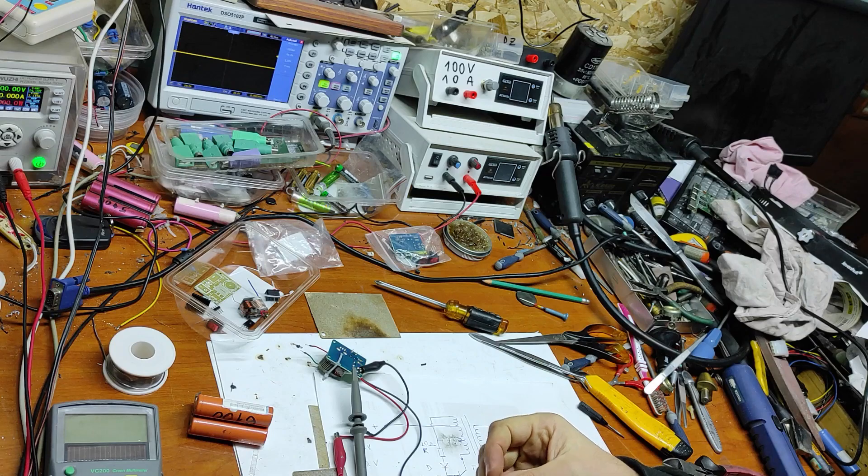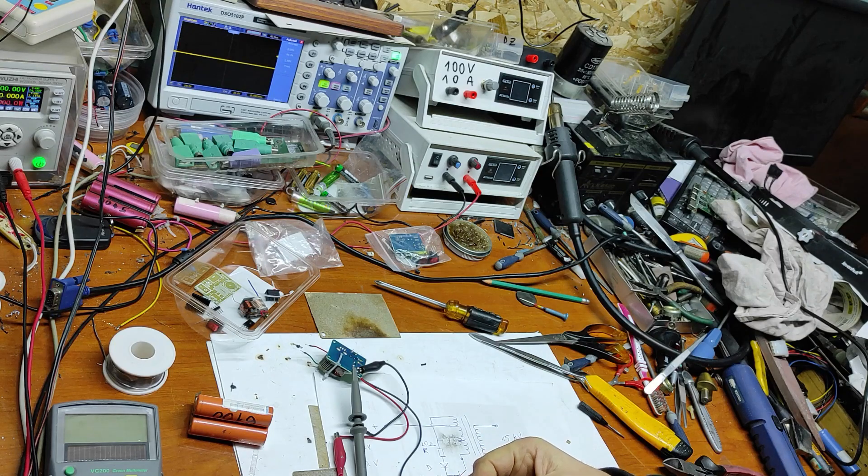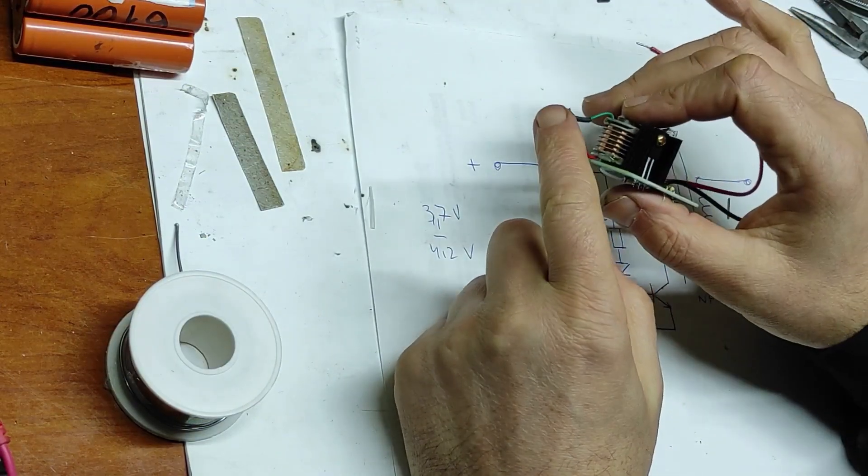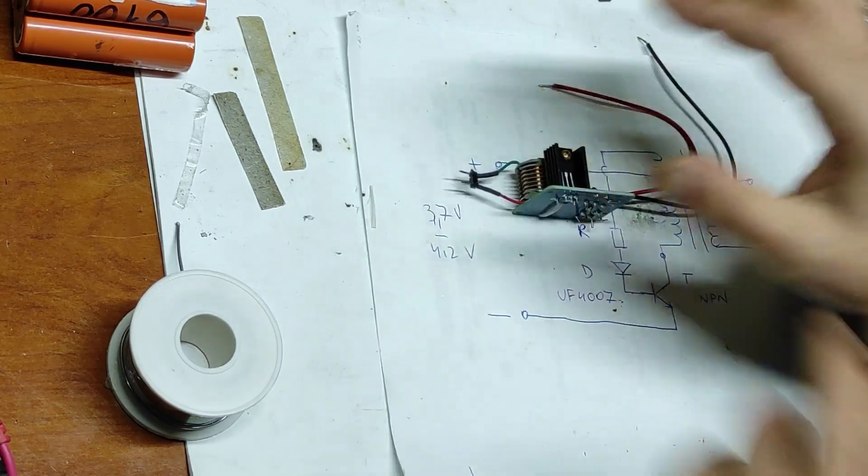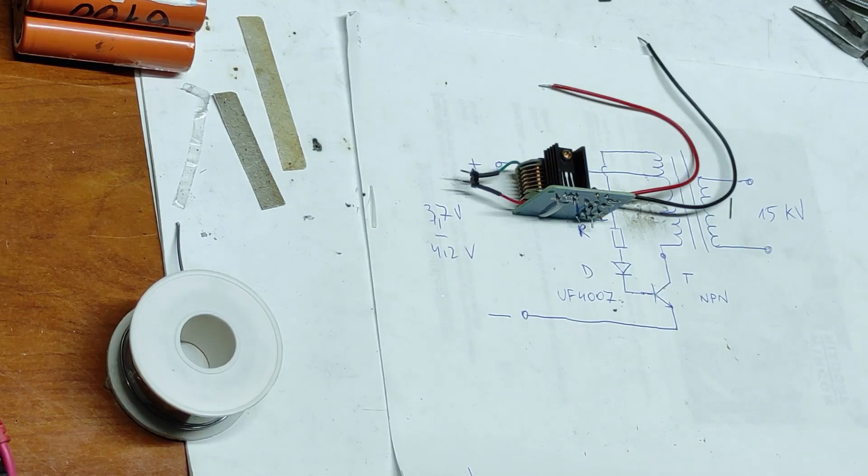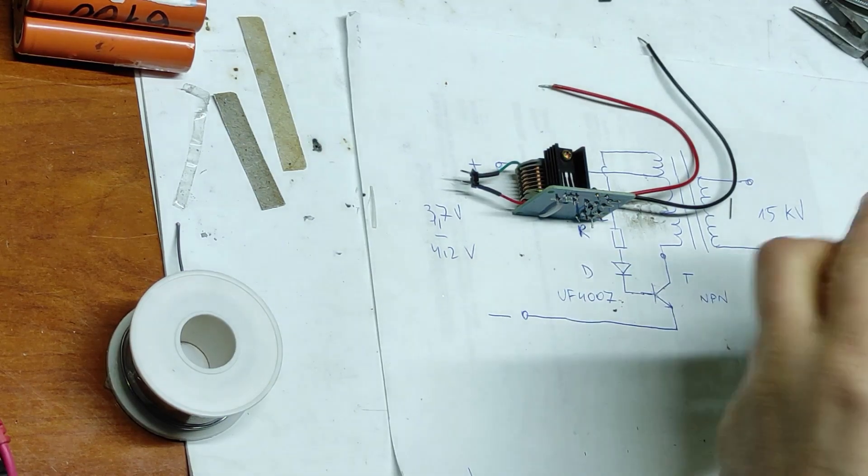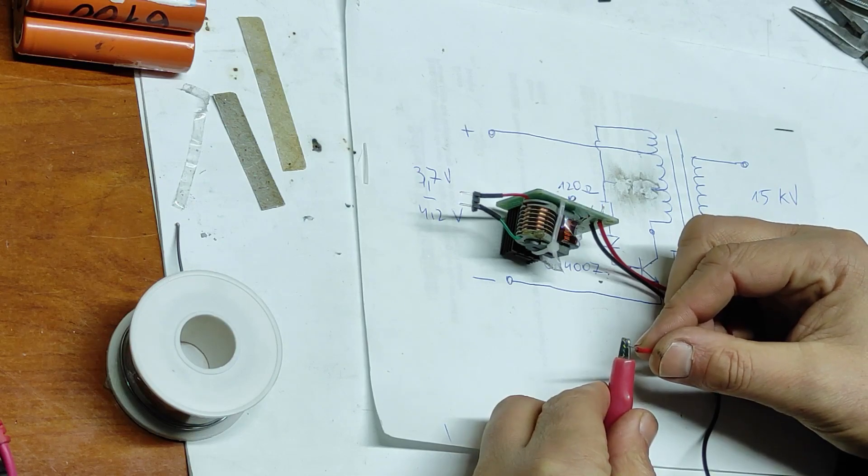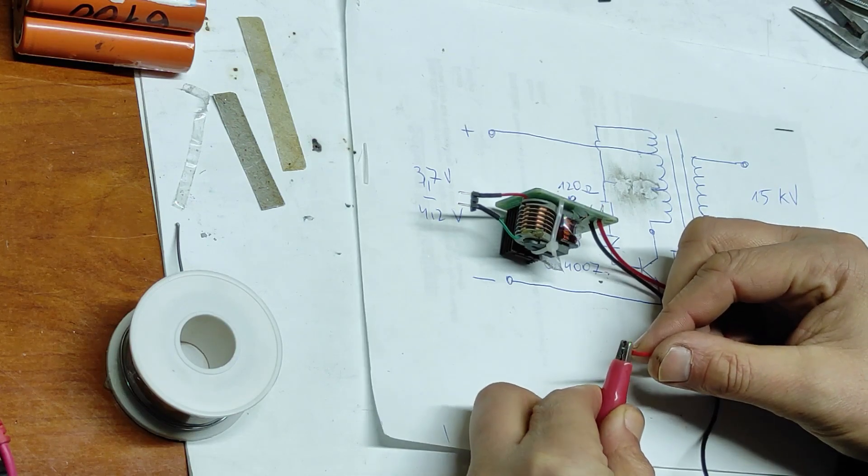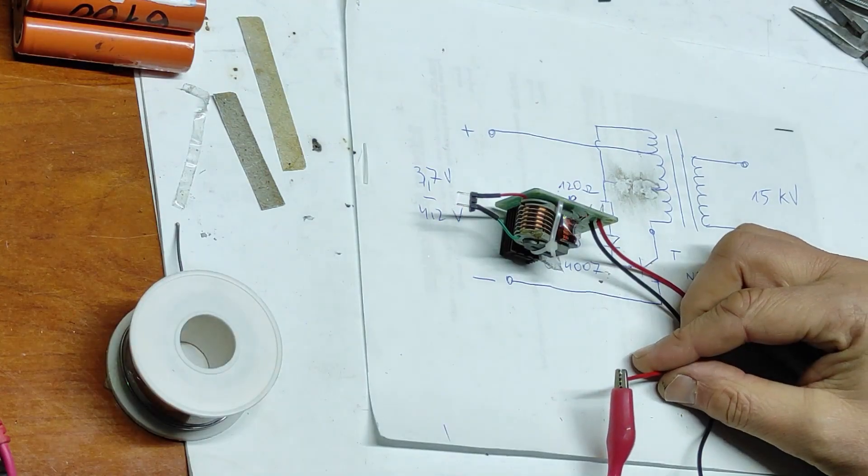Now let's mount these pins. I've put these pins and some insulation here. Now let's make a test. I will use the power supply. It's working perfect. I have two amps current.